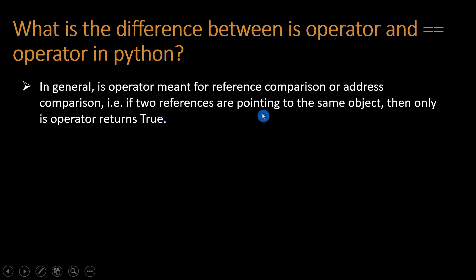If two references are pointing to the same object, then only the is operator returns True. The is operator always compares the address or reference. If two addresses are the same, we get the output True, otherwise False.